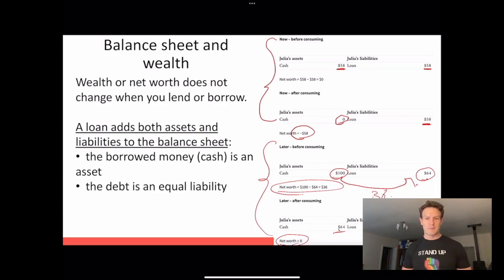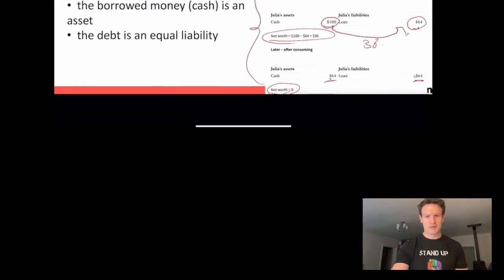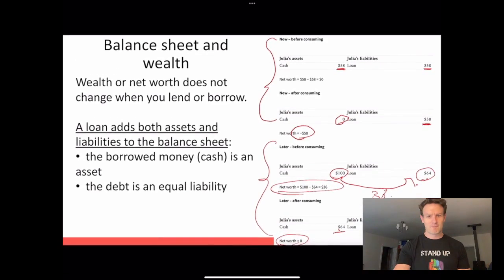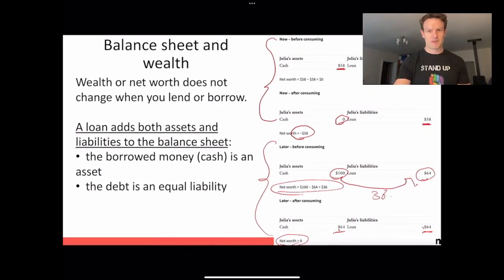That's what we think about when we think about Julia having a choice about what to do between now and the future, and thinking about what's best in terms of what she can do. You can see there that difference, the zero net worth, the $64 worth of cash, and she has to pay back the $64 loan, and therefore her net worth is zero.